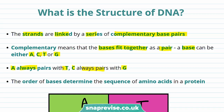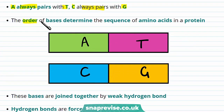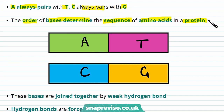What's also really important is the order of bases, because the order of bases determines the sequence of amino acids in a protein. You can see in this diagram that these bases are joined together, and these bases are joined by something called weak hydrogen bonds.